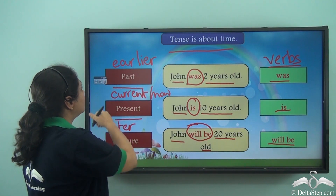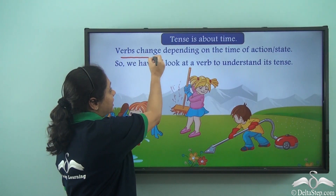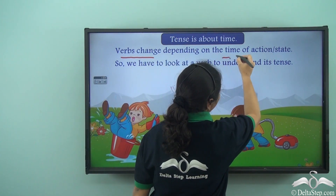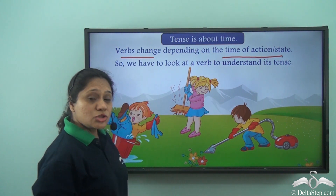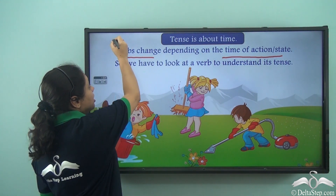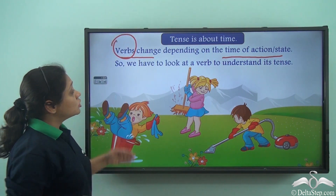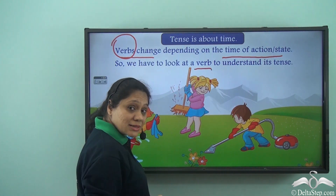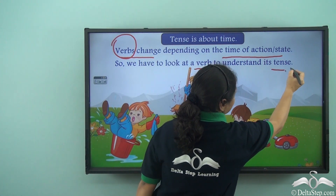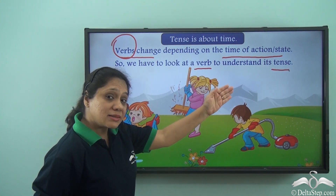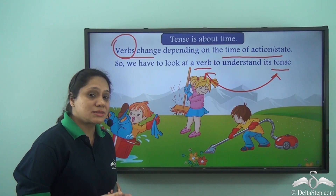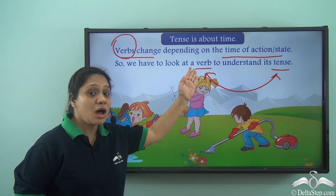So verbs change depending on the time of action or state. What is changing? Verbs. So we have to look at a verb to understand its tense. Verb and tense are closely related — to understand the tense, we have to look at the verb.